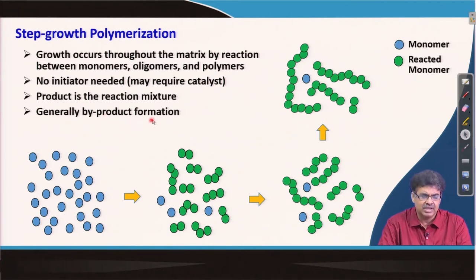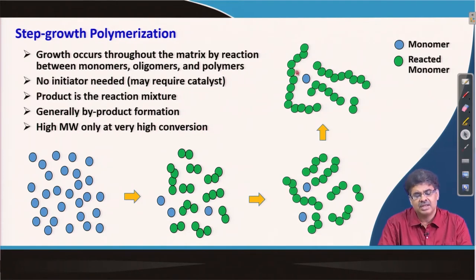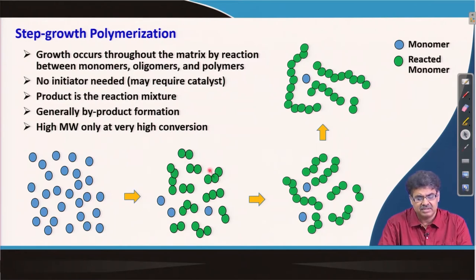Because we are reacting two functional groups, byproduct formation generally takes place. Also important is that high molecular weight polymers only form when most monomers have reacted — meaning we need high conversion. At low conversion, we only have small molecules: dimers, trimers, tetramers, oligomers. As conversion increases, chains get longer. So to achieve high molecular weight, we must have very high conversion in step growth polymerization.